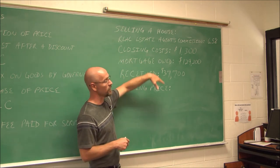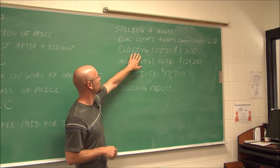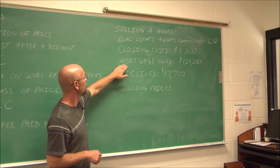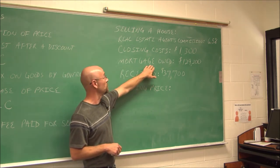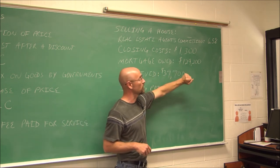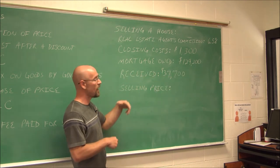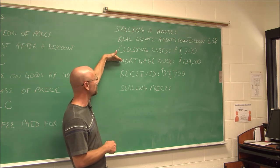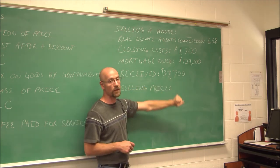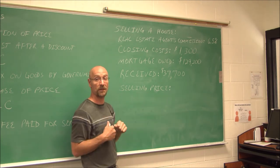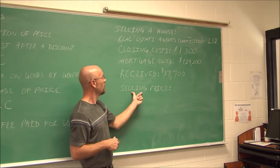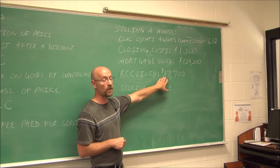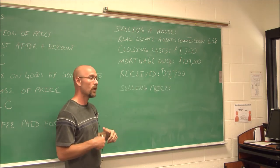In this case, we're going to be selling a house. It says a real estate agent's commission is 6.5%. Commission is a percentage times the total amount. The closing costs, these are fees that you might have to pay to the bank or some other fees that might be associated. In this case, it's $1,300. Maybe you still owe the bank some money on that mortgage. In this case, it's $129,300. And after you sell the house and you pay the real estate agent and you pay your closing costs and you pay the balance of your mortgage, you end up receiving $37,700. That's more than enough for that 20% down payment on the previous example. We want to know what you actually sold the house for. What was the selling price of the home if you received $37,700 after all these costs?